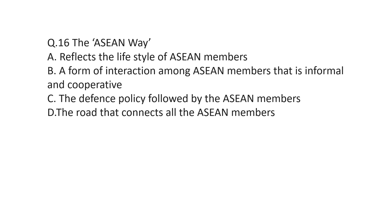Question number 16: The ASEAN Way — you have four options and must identify the correct statement. A: it reflects the lifestyle of ASEAN members. B: a form of interaction among ASEAN members that is informal and cooperative. C: the defence policy followed by ASEAN members. D: the road that connects all ASEAN members. The correct answer is B — a form of interaction among ASEAN members that is informal and cooperative.